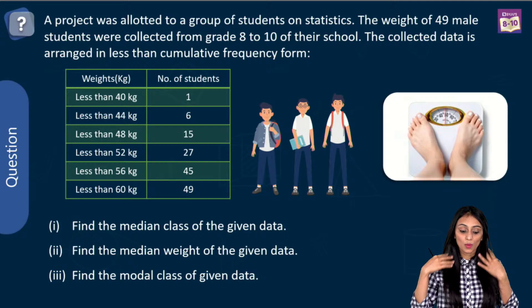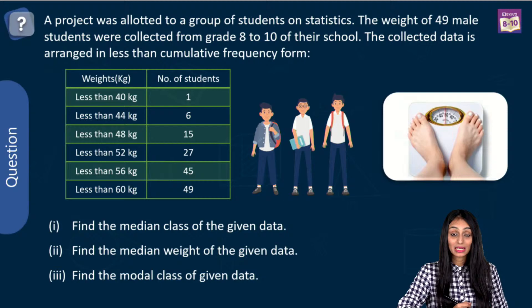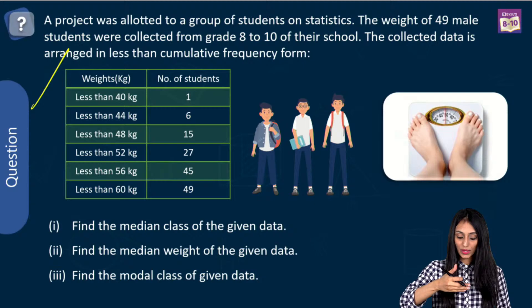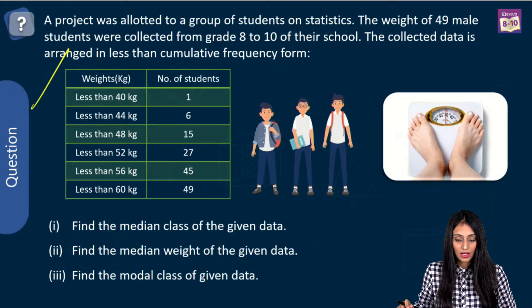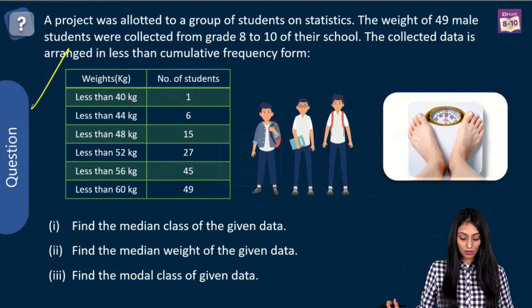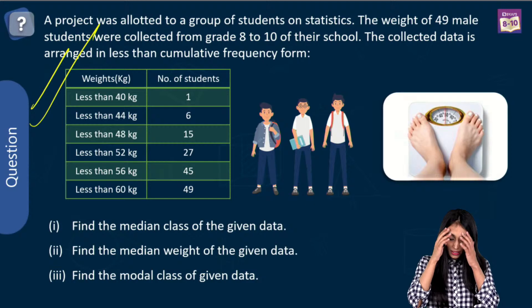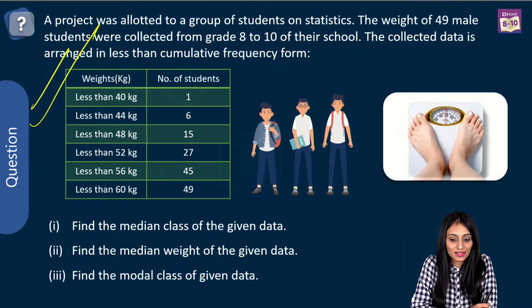This was from surface areas and volumes. Now the last question is from statistics. A project was allotted to students on statistics. The weight of 49 male students from grades 8 to 10 was collected and arranged in less than cumulative frequency form. Three questions are based on this: find the median class, find the median weight, and find the modal class.